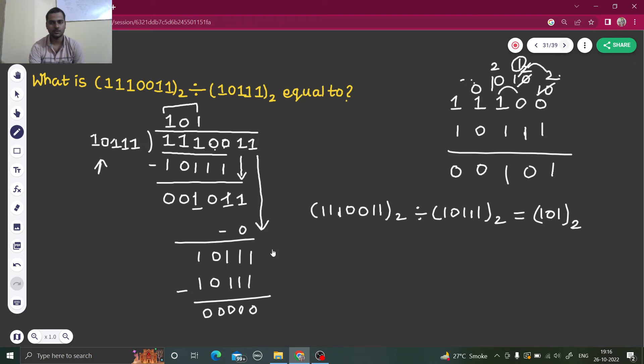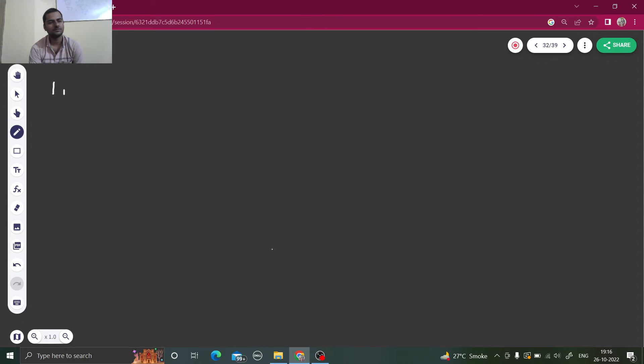So first of all I will convert 1110011 into decimal. So this I will multiply by 1 then 2 then 4 then 8 then 16 then 32 and then 64. So I will get 1 into 1 is 1, 2 into 1 is 2, 4 into 0 is 0, 8 into 0 is 0, 16 into 1 is 16, 32 into 1 is 32 and 64 into 1 is 64. 64 and 6 is 70, and 10 is 80, 80 and 30 is 110, 112, 114 and 115 is what I am getting and this is in decimal.